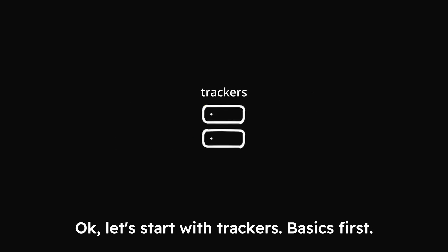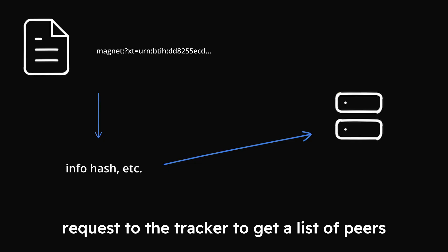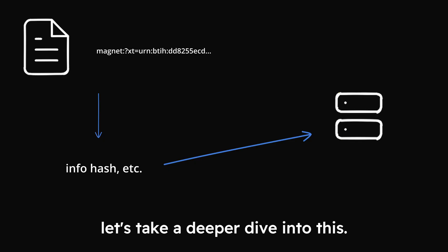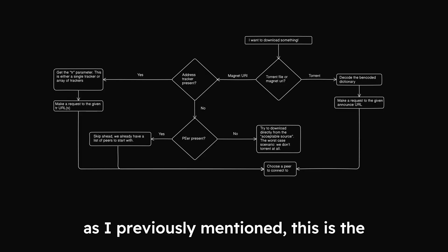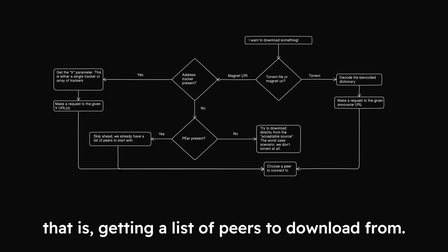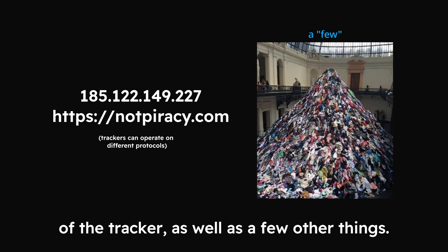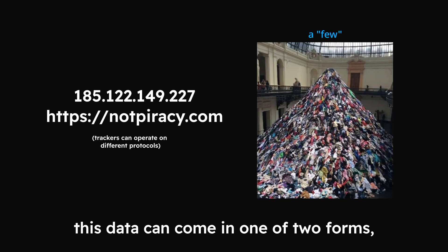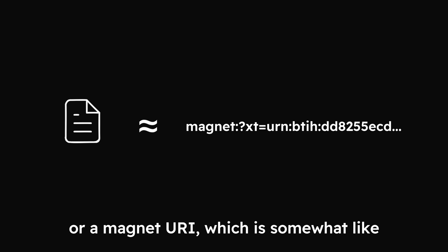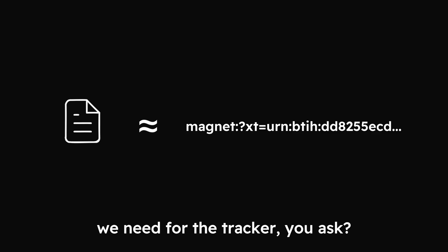Let's start with trackers. We start with either a torrent file or this thing called a magnet URI. We extract the relevant information and make a request to the tracker to get a list of peers to start making requests to. This is the very first part of the BitTorrent protocol's process of downloading files — getting a list of peers to download from. Naturally, we need the IP address or URL of the tracker, as well as a few other things. This data can come in one of two forms: a .torrent file or a magnet URI, which is somewhat like a torrent file in the form of a URI.